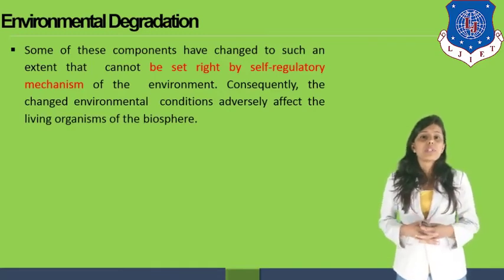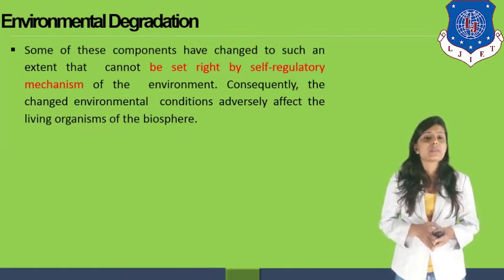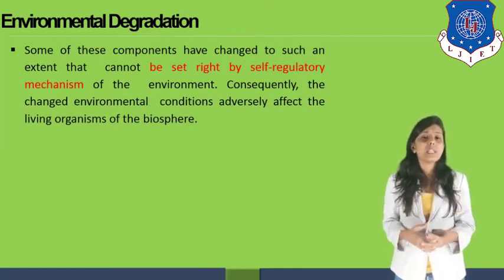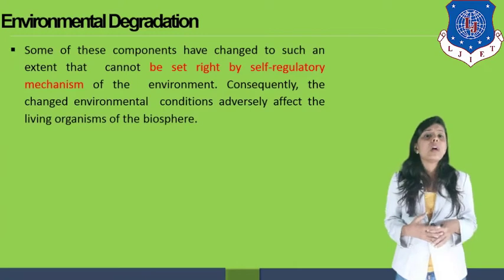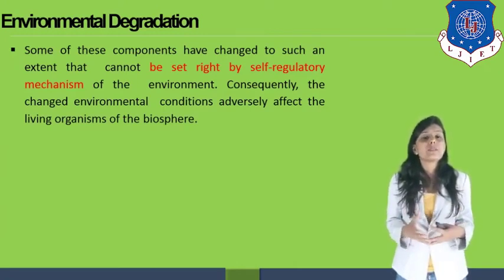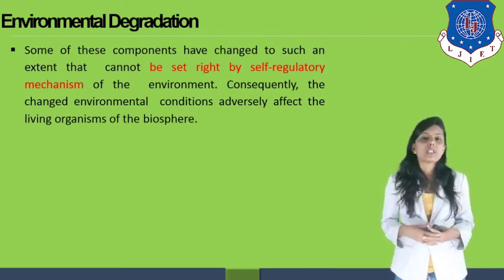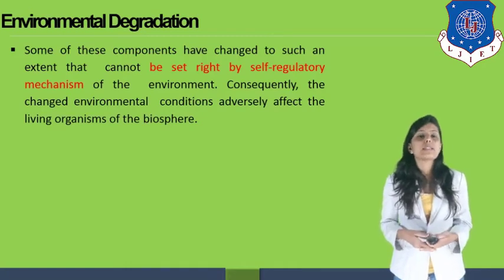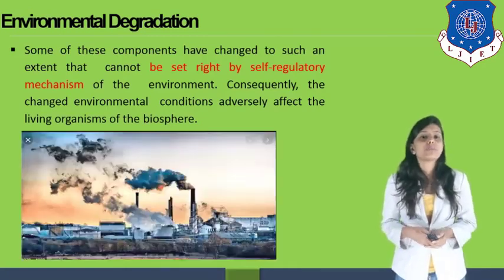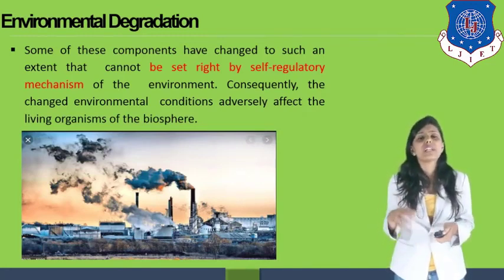Some components of the environment have changed to such an extent that they cannot be set right by self-regulatory mechanisms. The environment has a mechanism to repair itself, but it has been damaged so badly that repairing itself is no longer possible. Consequently, the changed environmental conditions adversely affect the living organisms of the biosphere. Industries again emit pollution into air and water, and environmental degradation continues to happen.